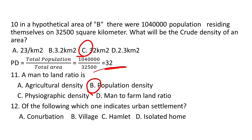Question number 12. Of the following, which one indicates urban settlement? A. Conurbation, B. Village, C. Hamlet, D. Isolated home. Conurbation indicates urban settlement, while village, hamlet, and isolated home indicate rural areas. So the answer is A.